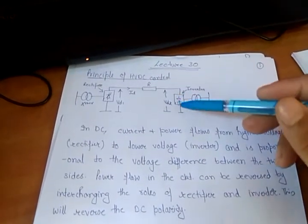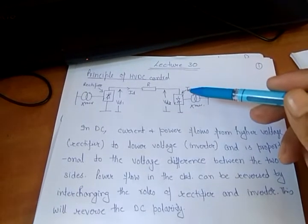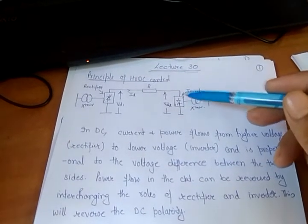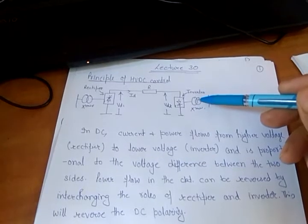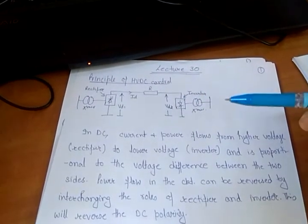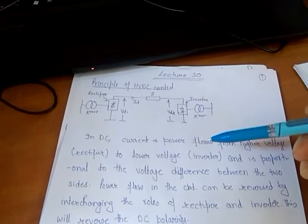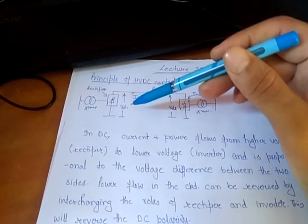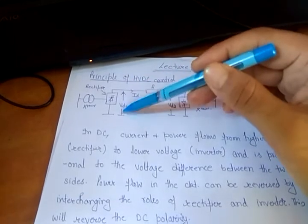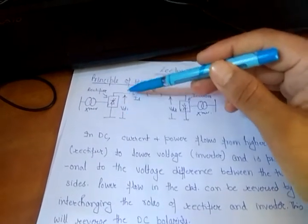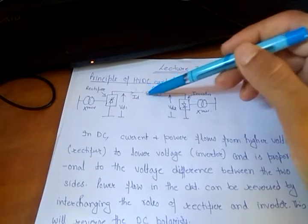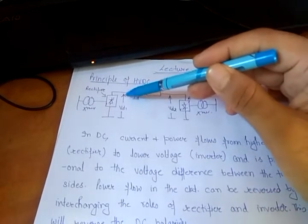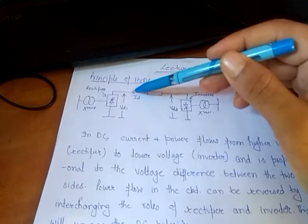In HVDC, generally the inverter station is controlled such that the direct voltage of the system is fixed, and it has a relationship with the voltage on the AC side. The other station, called the rectifier station, has its direct voltage adjusted so that the current flowing in the system is controlled to the desired transmitted power.